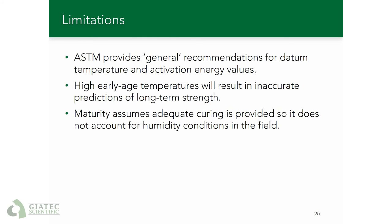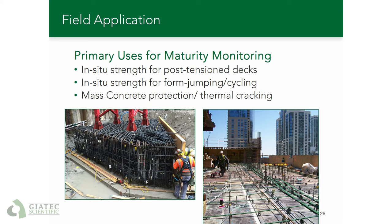Now let's look at maturity from a practical perspective. In the field, the majority of uses for maturity monitoring is in-situ strength for post-tension decks, and it is used almost exclusively for determining the strength of slabs. It can also be used for in-situ strength for form jumping and cycling, generally to save time for the contractor. For example, if the concrete needs to reach a strength of 500 psi in order to jump the forms to the next level, the needed maturity can be determined to minimize cycle time. A more unique use is in mass concrete for thermal cracking, where a maximum temperature differential of 35 degrees in an element can leverage ACI documents, allowing an engineer to increase the allowed temperature depending on the capacity of the element and the allowable internal stresses.